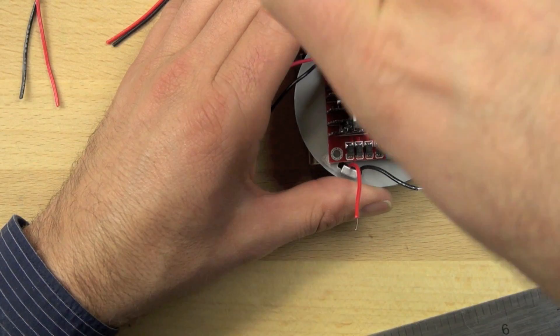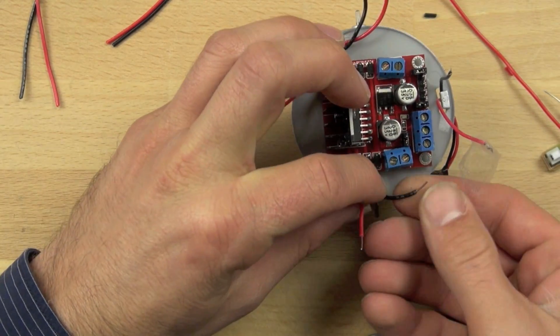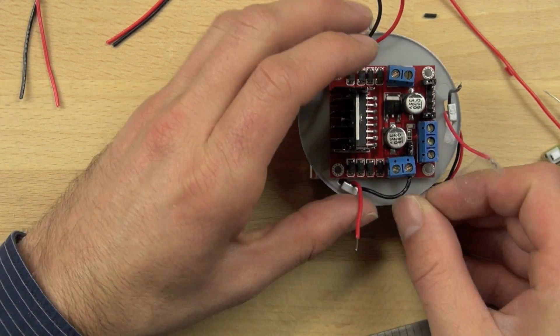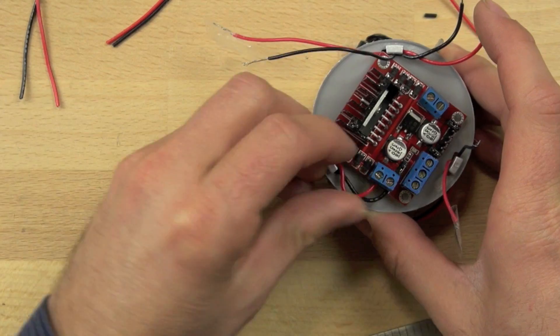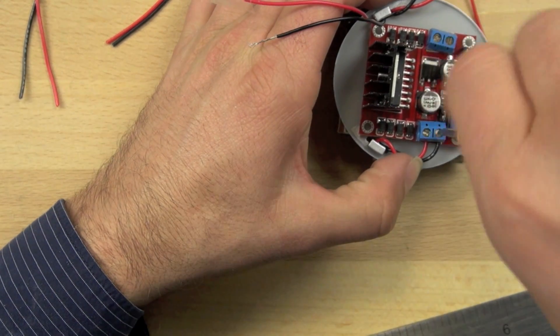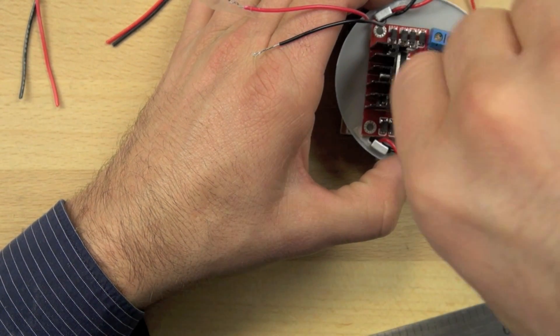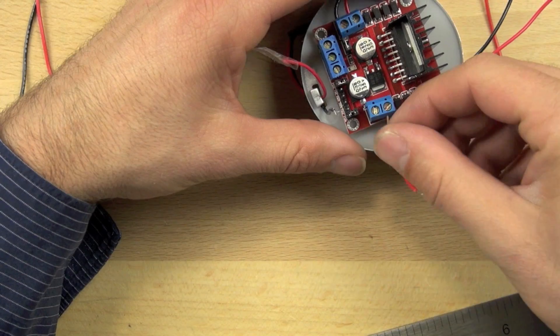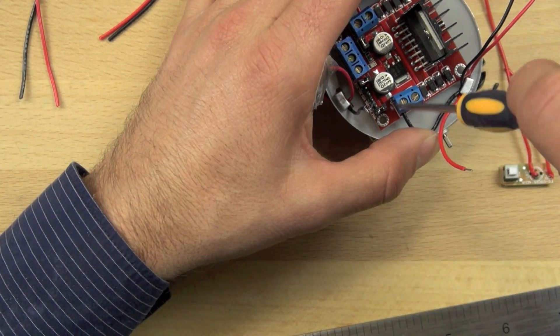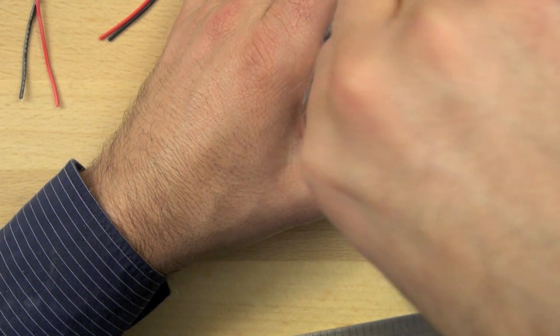So we're going to loosen our screws on the motor mount connector connection there. And then we're going to put our two motor wires in and we'll tighten those screws back down and that's going to hold those wires in place. And notice there's no exposed wire. It's just insulation coming out of the motor mount block there, the motor block.